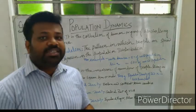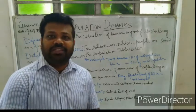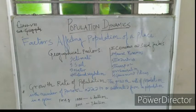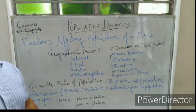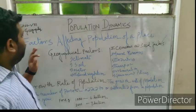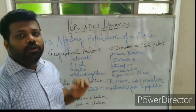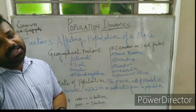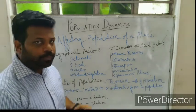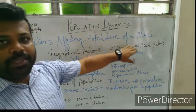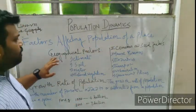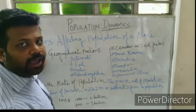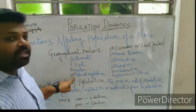There are several factors affecting the distribution of population density. Our next topic is: factors affecting the population of a place. We have divided these into two parts — one is geographical factors, and the other is economic and social factors. Geographical factors include climate, soil, water, and natural vegetation.